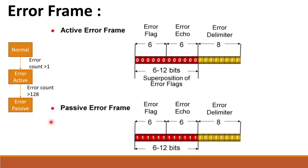The error frame format consists of an error flag of 6 bits, an error echo of 6 bits, and finally an error delimiter of always 8 recessive bits, both in the active and passive error frames. In the active error frame we have 12 dominant zeros, and in the passive error frame we have 12 recessive ones.